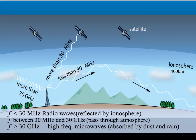Our atmosphere is made with several different layers, each with different properties. One of these layers is called the ionosphere. It is very important for longer range communications. The ionosphere is at a height of around 400 kilometres from the surface and is unusual as it contains a large number of ionised gases.